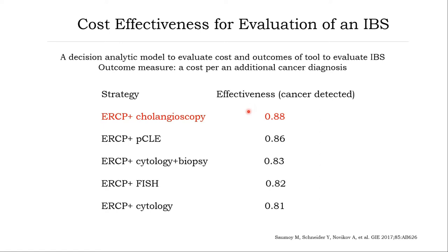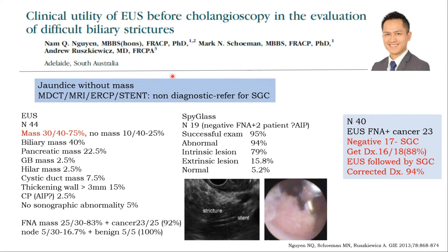Combining ERCP and cholangioscopy gives maximum effectiveness compared with other technologies. In a good study from Australia, patients undiagnosed after ERCP were referred for cholangioscopy. Using endoscopic ultrasound alone first found mass in up to 25 percent of 44 patients. But combining EUS first, followed by cholangioscopy in those undiagnosed by EUS, gave a total diagnostic accuracy of 94 percent. This is a highly valuable approach if available in your center.